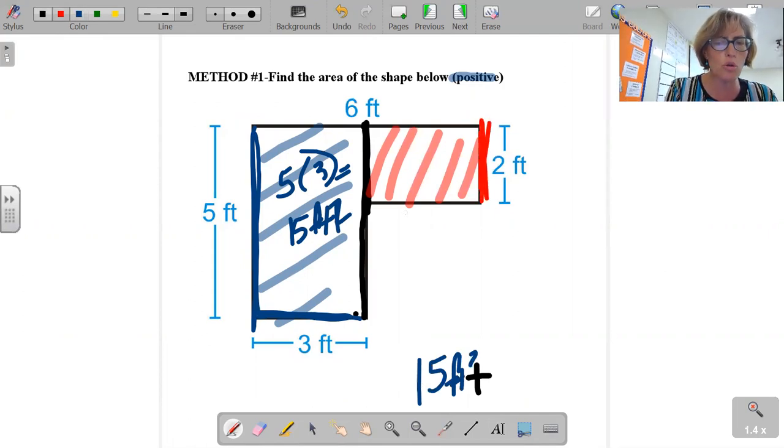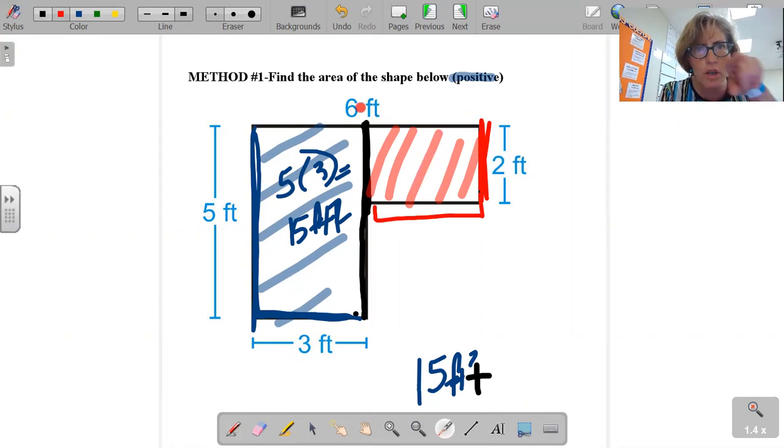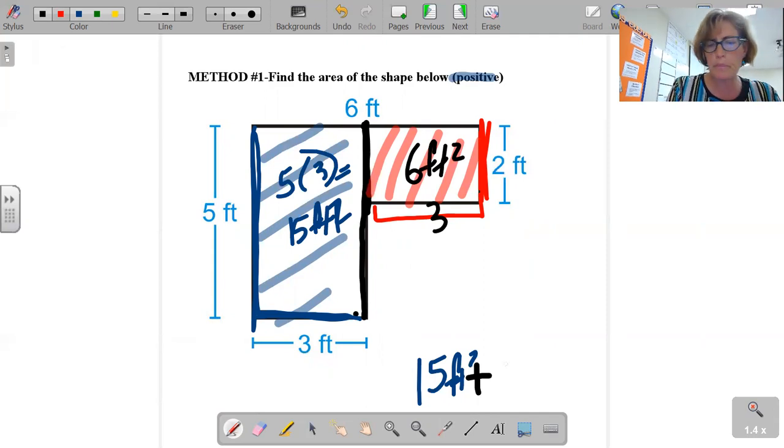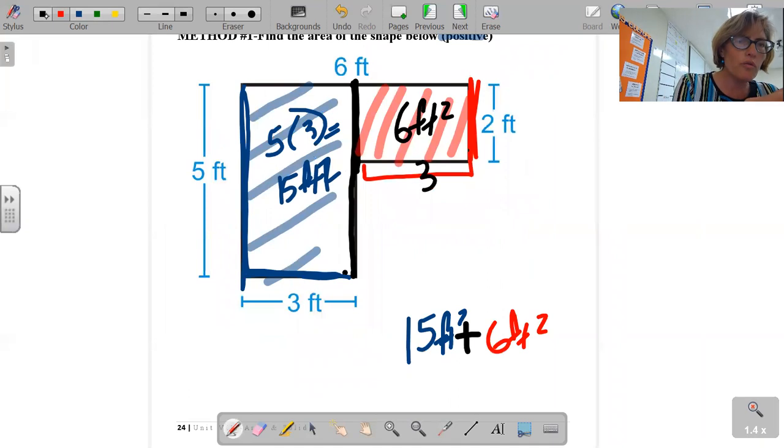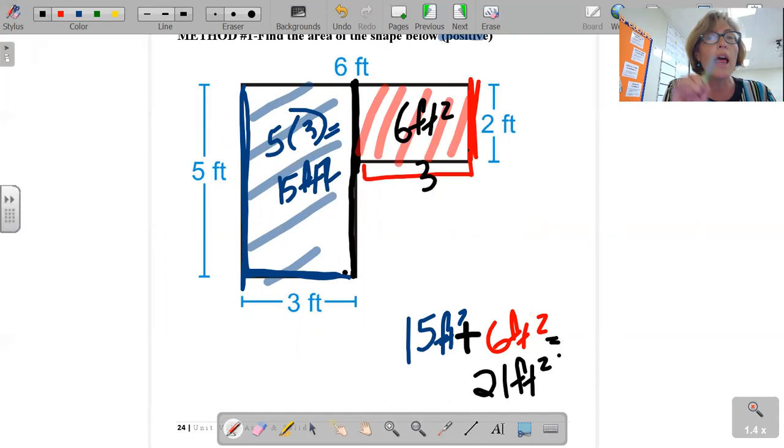So we have 15 feet squared, and we take a look here. This is two, and you go like that. What is that? Well, if you trace all the way, trace folks, trace, that's three. That's three, that's six. So right there must be three. Two times three, that means this is six feet squared. So 15 plus six, that's going to be 21 feet squared. That's what we call positive, where you add things together.